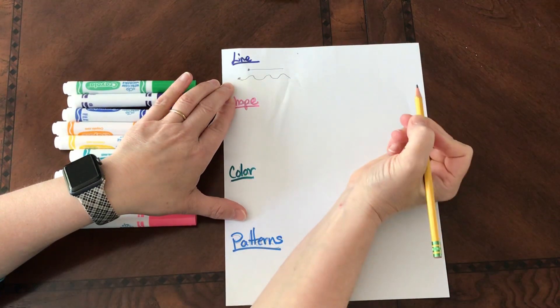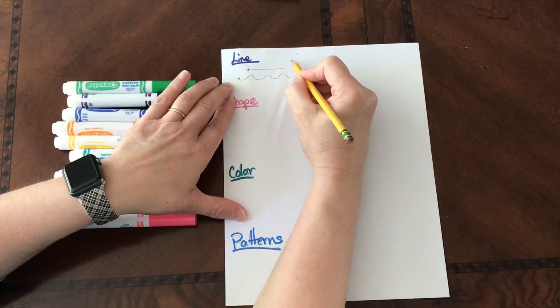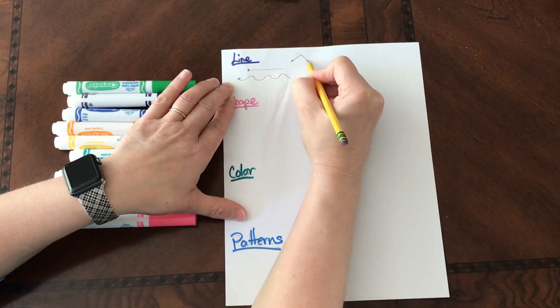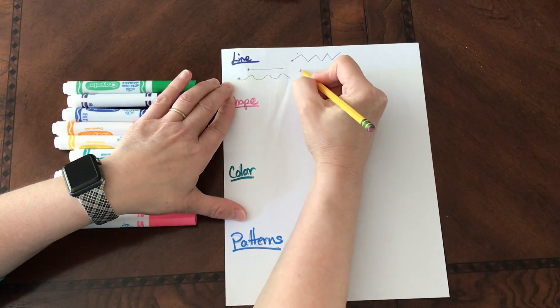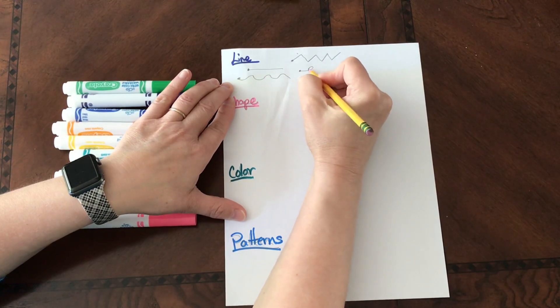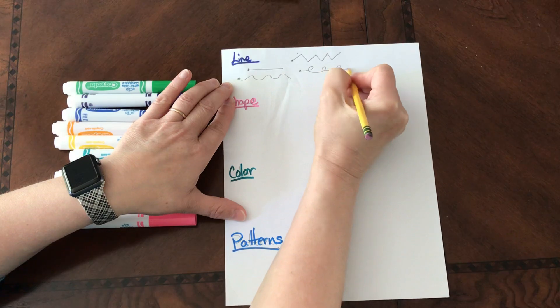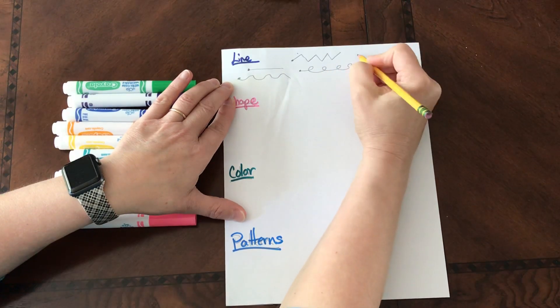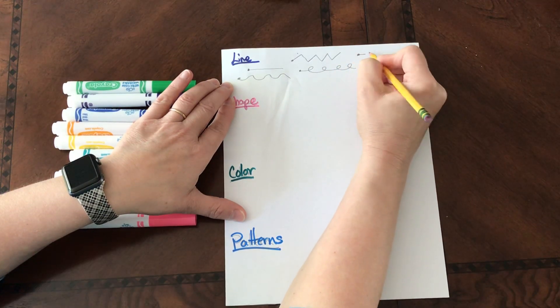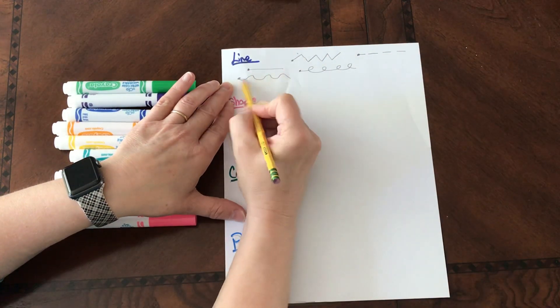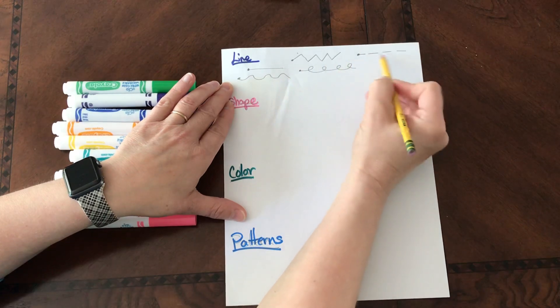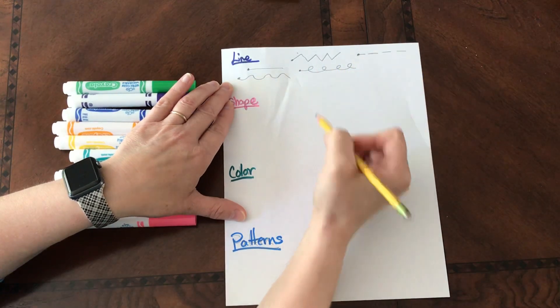That little dot can walk curved. Think about outside when you're walking. That line can go zigzag. That line can walk in loops. This line can skip. So a line is a dot that goes for a walk, and you just kind of decide what direction and how is that line going to walk.